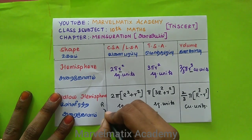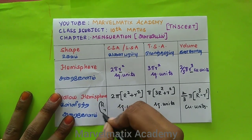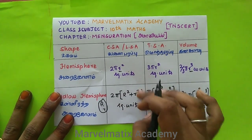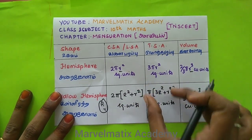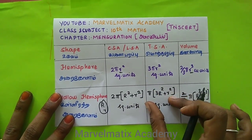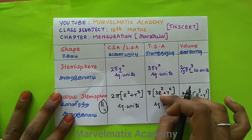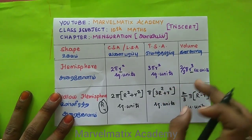So this is the whole figure. Capital R is the outer radius and small r is the inner radius. We can talk about this — TASM is totally different. It is a total difference in the formulas.